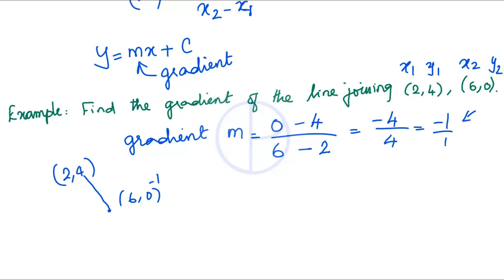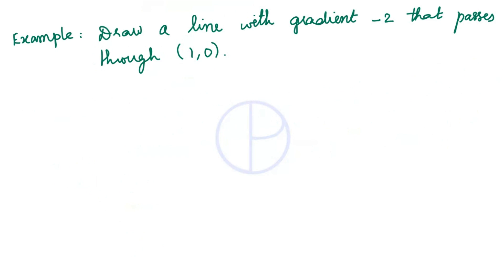If you extend this line: the y-value changes by −1 (downwards one unit) and the x-value is positive (moves right), so the next point would be (7, −1). Example: Draw a line with gradient −2 that passes through the point (1, 0). The gradient −2 can be written as −2/1, where −2 indicates 2 units downwards and 1 indicates 1 unit towards the right.